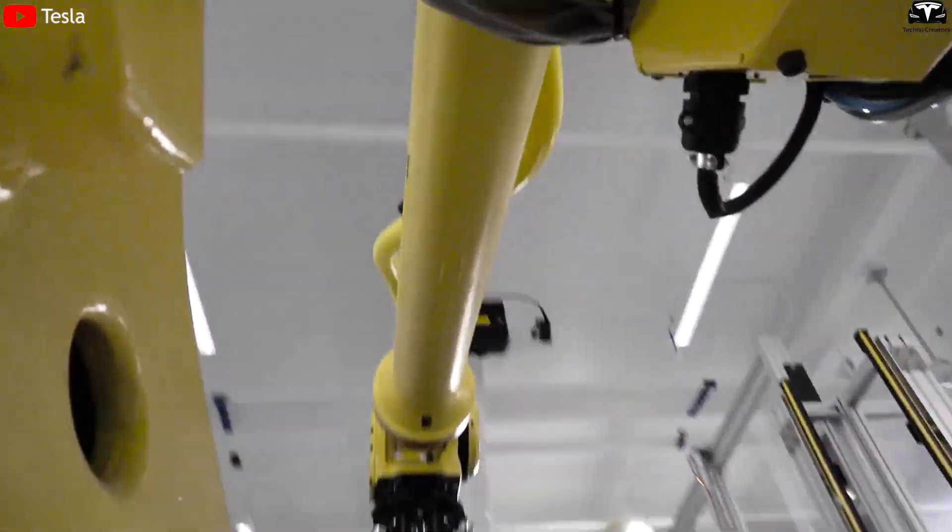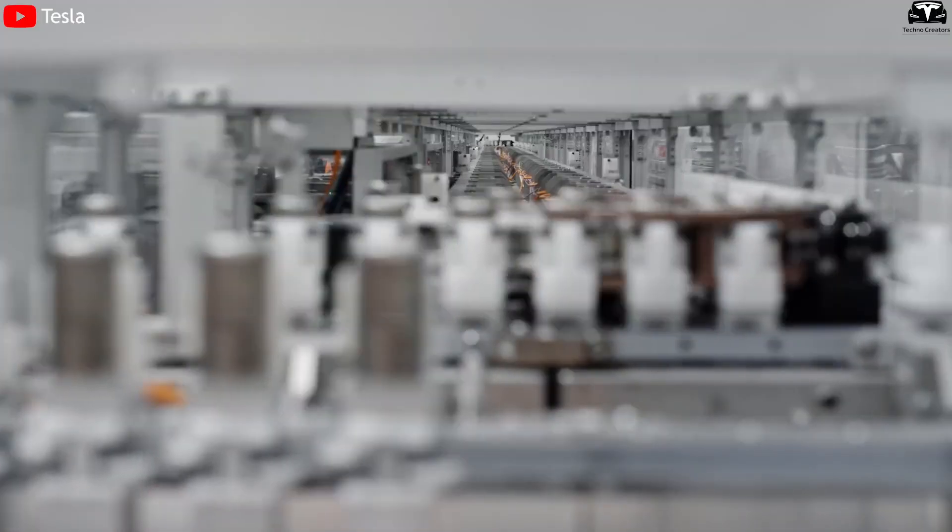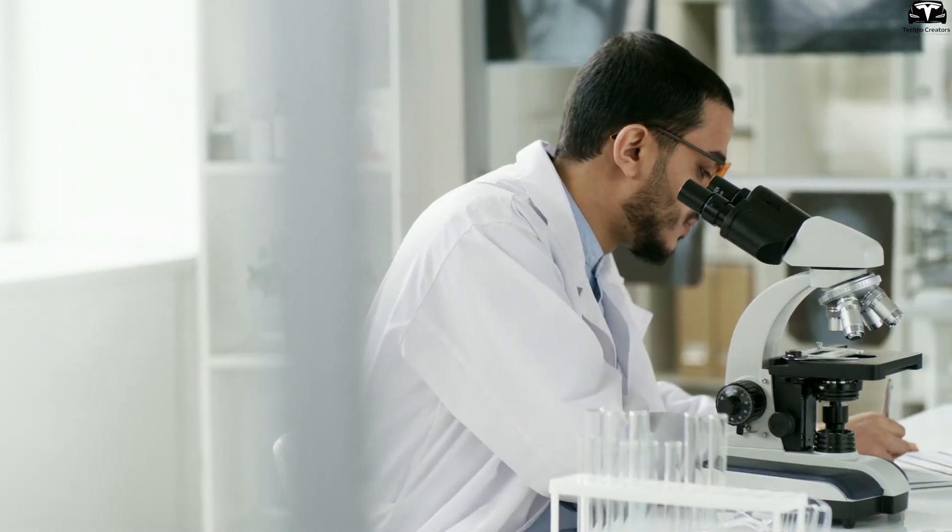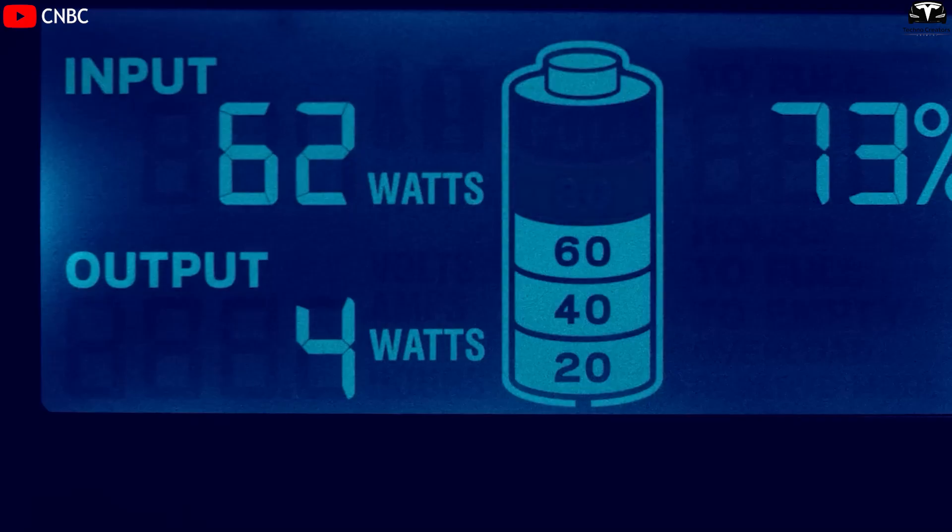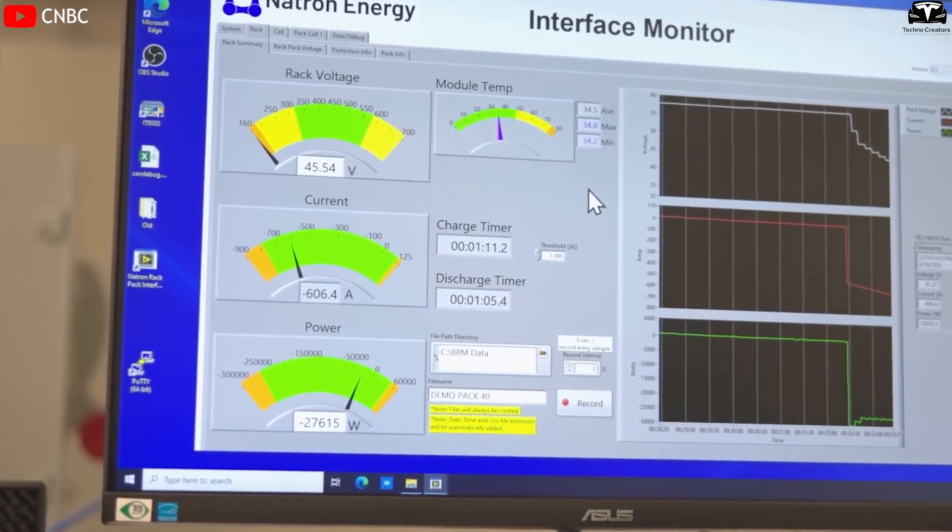Quality control during production is stringent. Each batch of cells undergoes rigorous testing to verify consistency, safety, and performance. Independent laboratories often conduct these tests to provide unbiased evaluations. Parameters such as charge, discharge efficiency, cycle life, capacity retention, and thermal stability are measured to ensure the battery meets industry standards.